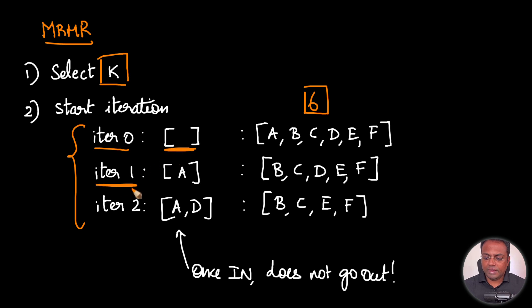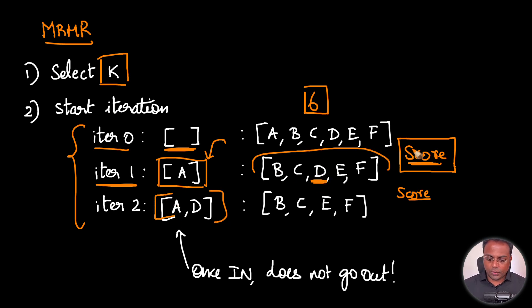Let's simplify this. Let's say you have only six variables. From the six variables, we are going to select only the most important ones. In the first iteration, we start with nothing. In the second iteration, from these six variables, we will calculate a score. Based on the score, whichever variable is having the highest score, we will select that particular variable. Once it comes into the bucket, this variable does not go out.